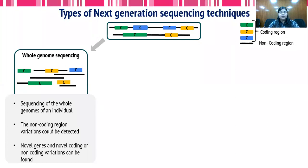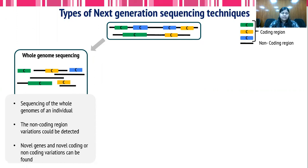The types of next generation sequencing techniques currently available include whole genome sequencing, wherein all components of the genome of an individual — both coding and non-coding regions — are sequenced. Non-coding region variations can be easily detected using whole genome sequencing, and we could also identify novel genes or novel coding or non-coding variations in the individual.